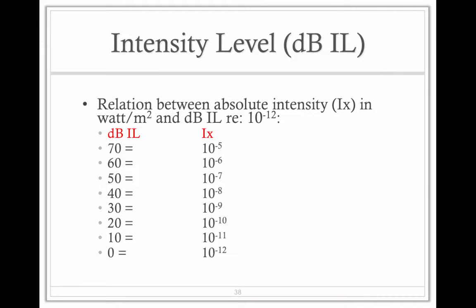Here are some more problems for us to work on. The relationship between the absolute intensity in watts per meter squared and dB IL relative to 10 to the negative 12. We can have an absolute of 10 to the negative 5 compared to the reference 10 to the negative 12. What do we get? Negative 5 minus negative 12 equals positive 7. Seven bels. Turn it into decibels, times it by 10, 70 decibels.